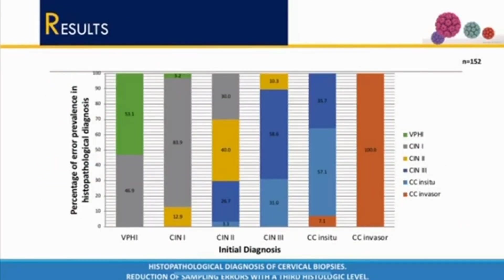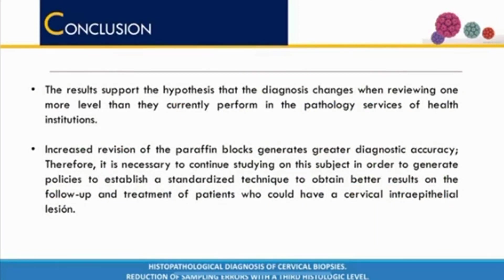One of the main results of our study, as seen in this graph, is that from the second cut of the paraffin block, the diagnosis changed relative to the first cut made by the institution. For example, of the women who were diagnosed with HPV, 46.9% were in fact undergoing low-grade neoplasia. And for those women diagnosed with CIN 2, 7.1% of them had invasive cancer. All of this with a p-value less than 0.05. The results support the hypothesis that the diagnosis changed when reviewing one more level than currently performed in the pathology service of health institutions.